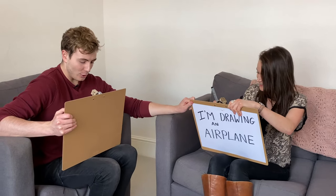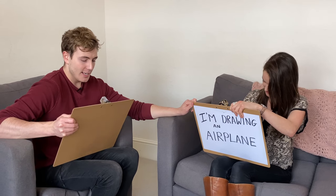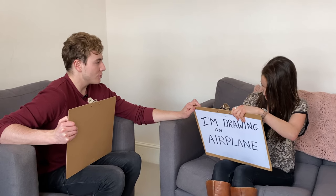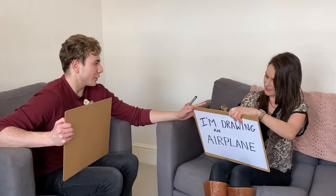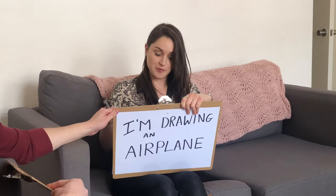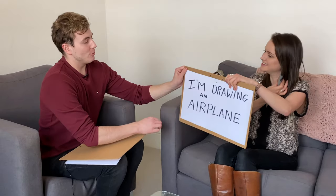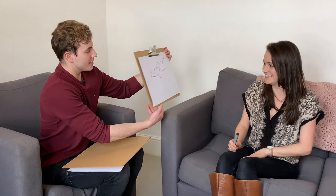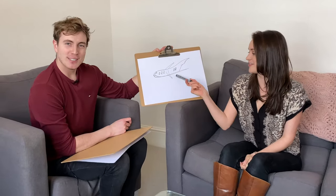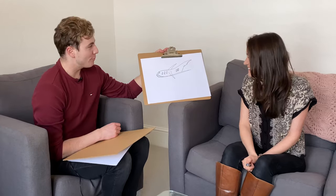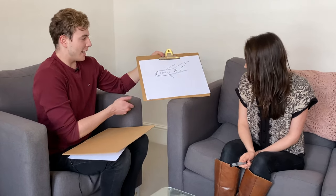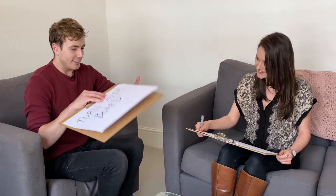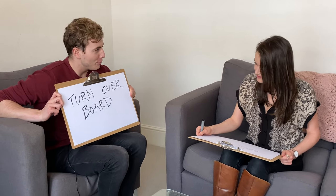Now, before I find out what you've drawn, just to clarify, that was a completely random object, a free choice. Perfect. So let's see what you've drawn here. Can you just tell everyone what that is? This is a very, very budget airplane. Now, I want to show you what I've drawn. I've actually not drawn anything — I've written you a message. It says: turn over the clipboard.